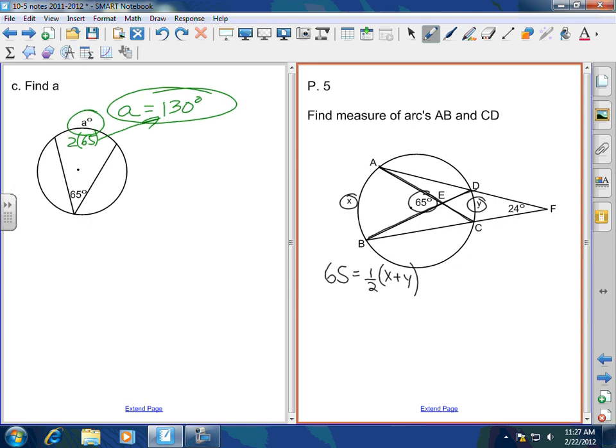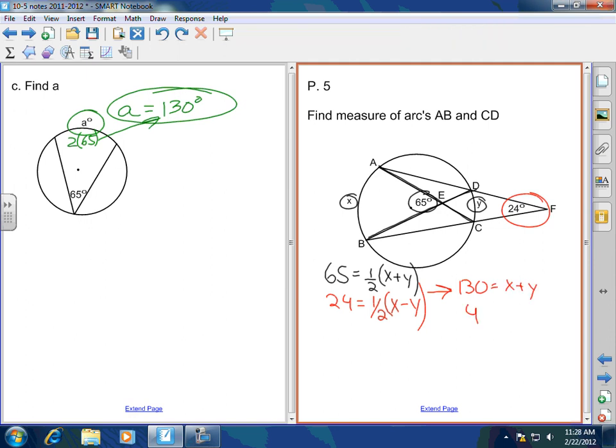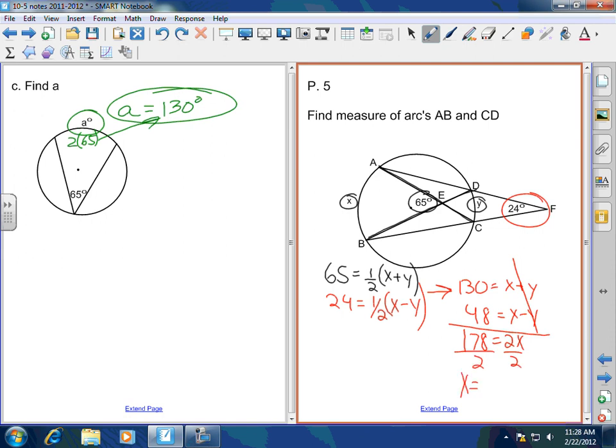Because it's a chord chord. So doesn't 65 equal 1 half of X plus Y? And then doesn't 24 degrees, which is a secant secant, doesn't 24 equal 1 half of X minus Y? You guys with me? So why don't we go ahead and multiply 2 to both of these. I'm going to have 130 equals X plus Y. And I'm going to have 48 equals X minus Y. The Y's cancel. 178 equals 2X divided by 2. And I'm going to get that X equals 89 degrees.